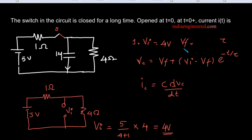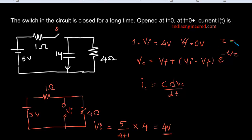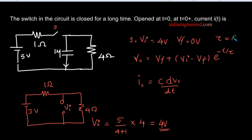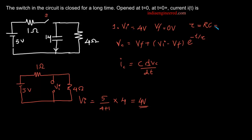Now we have to find V_final. Once the switch is open, the capacitor discharges through the resistor and attains a steady-state voltage of 0 volts. The time constant of this circuit is easy to find — it is the RC time constant, which is 4 microseconds.